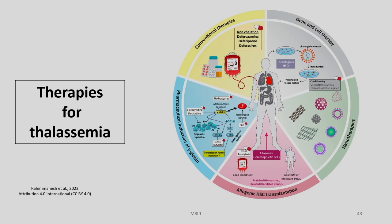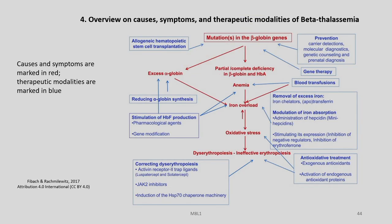One of the important domains that is under growth in this area is gene and cell therapy for thalassemia. We will be discussing some of the gene editing technologies and research going on in this respect. Before that, let us discuss some of the symptoms, causes and therapeutic modalities of beta thalassemia.